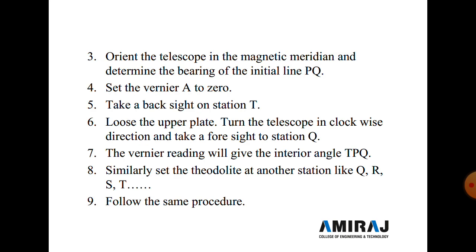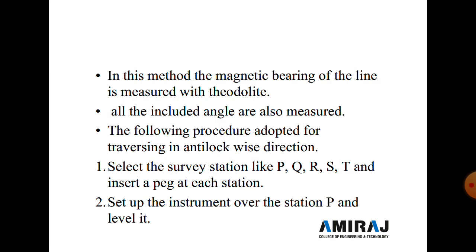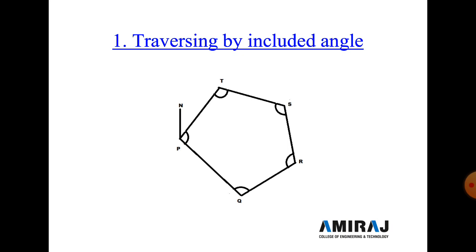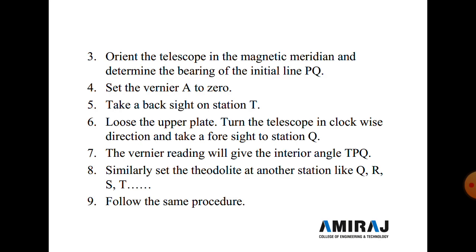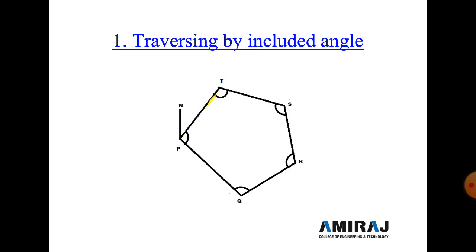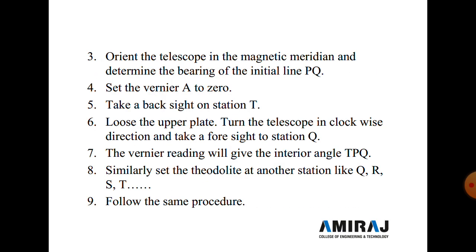Then set the vernier to zero and take a backsight on station T — bisect point T and take a reading on vernier A. Then release the upper plate, turn the telescope in a clockwise direction, and take a foresight to station Q — bisect point Q and measure the angle. The vernier reading gives the interior angle TPQ. Similarly, shift the theodolite to points Q, R, S, T, and repeat the same procedure to measure all interior angles.